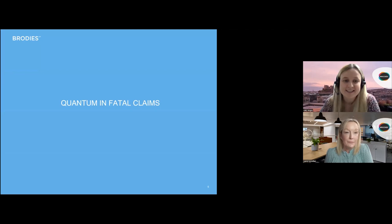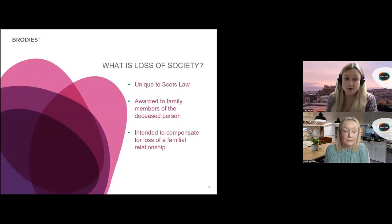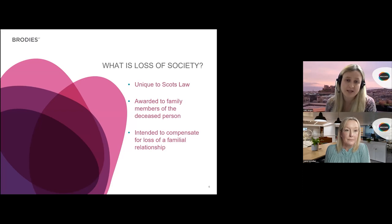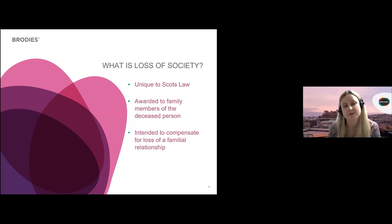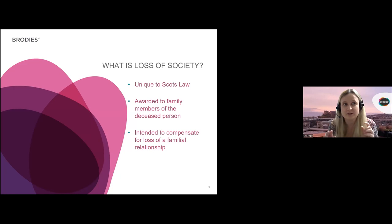Thanks Laura and hello everyone. The first topic we're going to be considering today is fatal claims and in particular recent cases relating to the level of awards made for loss of society. As a quick reminder — what is loss of society? Under this head of claim, family members of a deceased person who dies due to the negligence of a third party can claim compensation for the loss of that familial relationship. Whilst we refer to these claims generally as loss of society claims, that terminology is slightly misleading as the loss of society element is only one of three strands to the award.